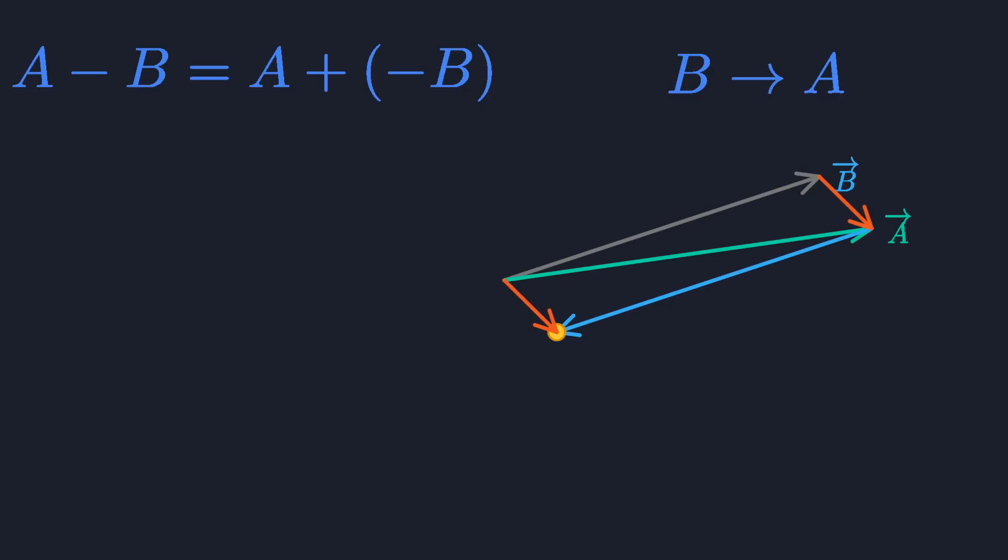This is where our new arrow operator really shines. It tells you exactly what happens. You walk from b to a. And if you flip the expression around, you still walk from b to a. This makes reasoning about vector subtraction a lot more natural.